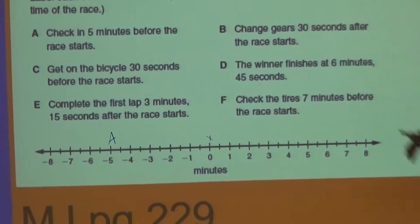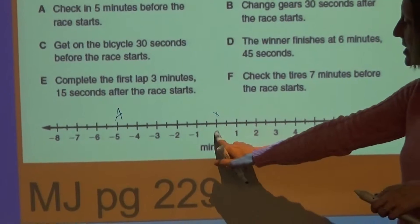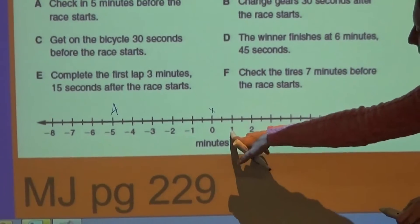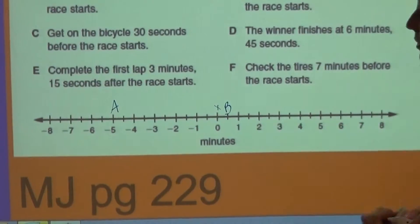A change here is 30 seconds after the race starts. So again, if my race starts at 0, 30 seconds later, well, 1 minute. I know 30 seconds is half of a minute. So letter B would go here.